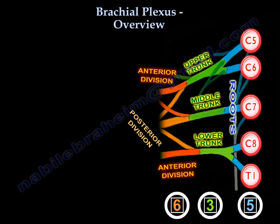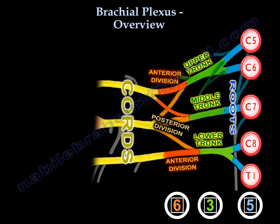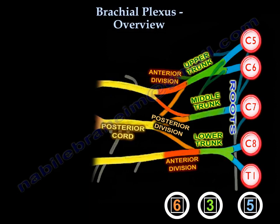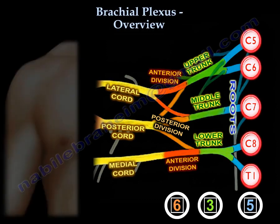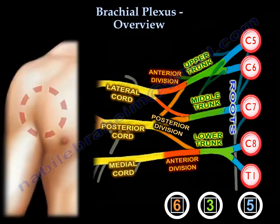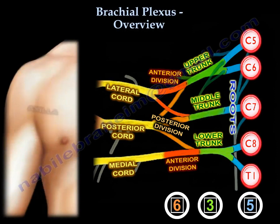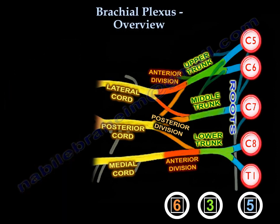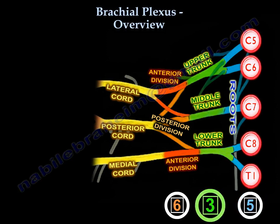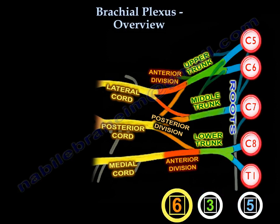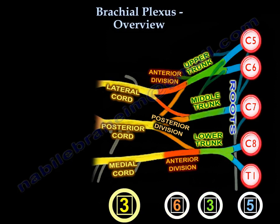Some of these divisions join to give you cords: the posterior cord, the lateral cord, and the medial cord. These cords are in the axilla. So five roots, three trunks, six divisions, and three cords.